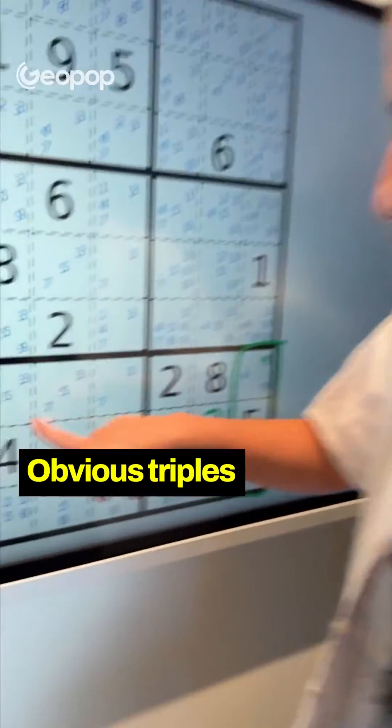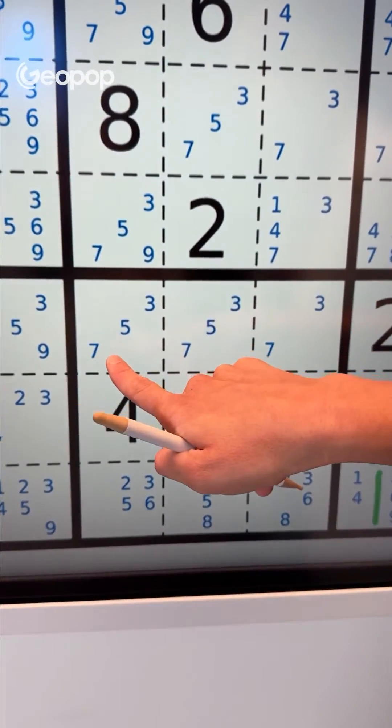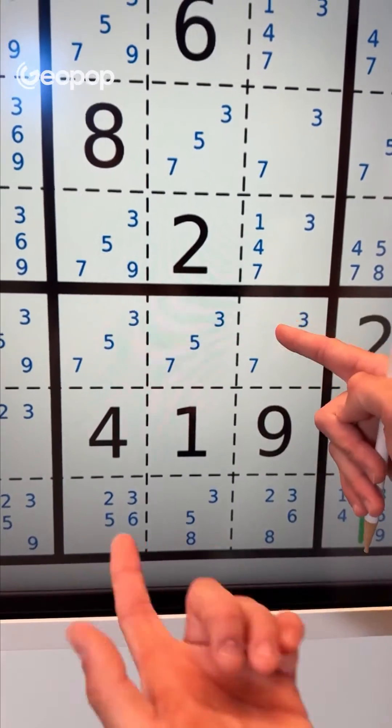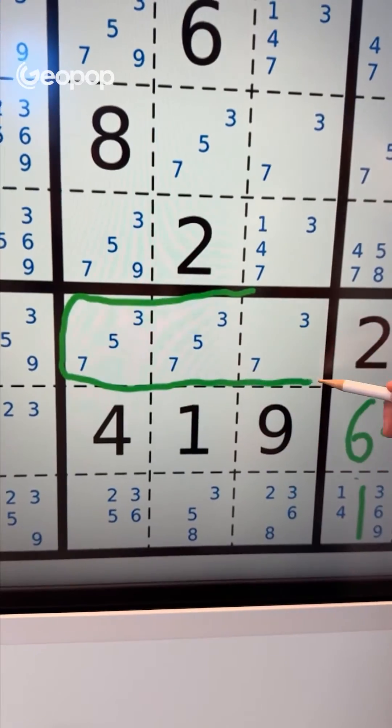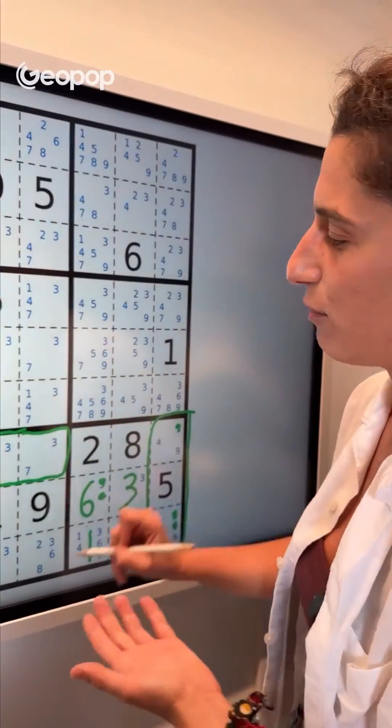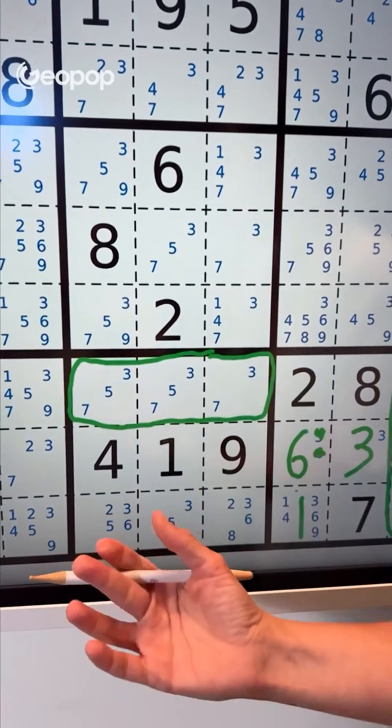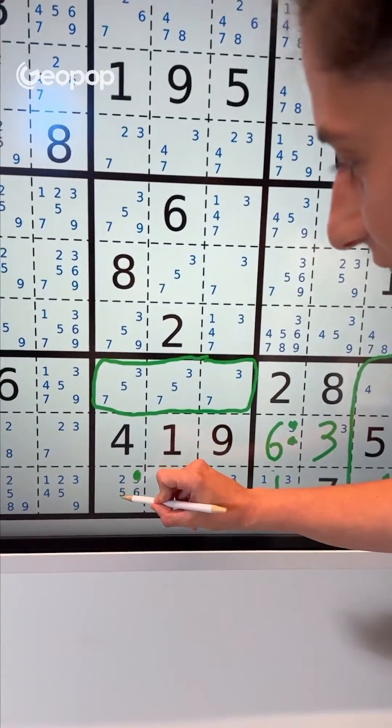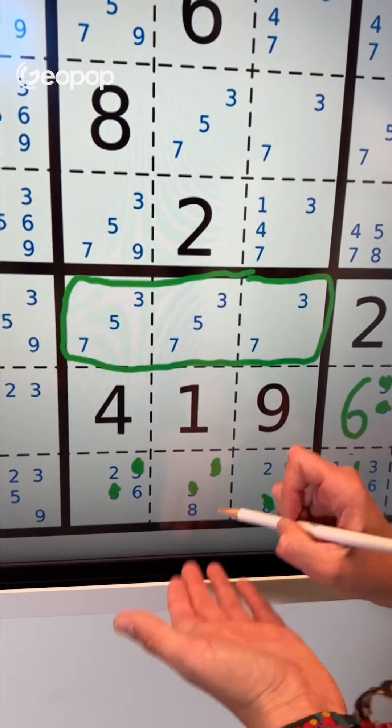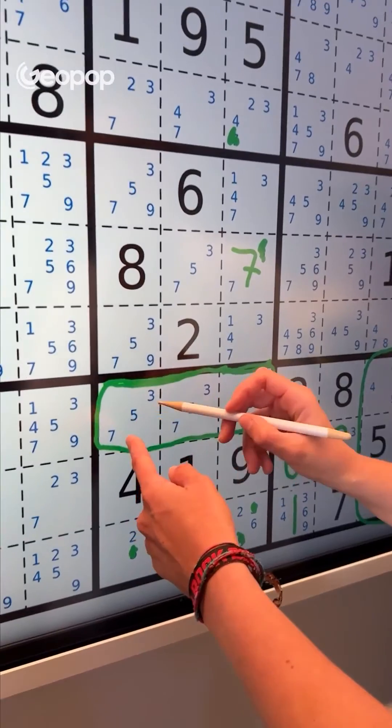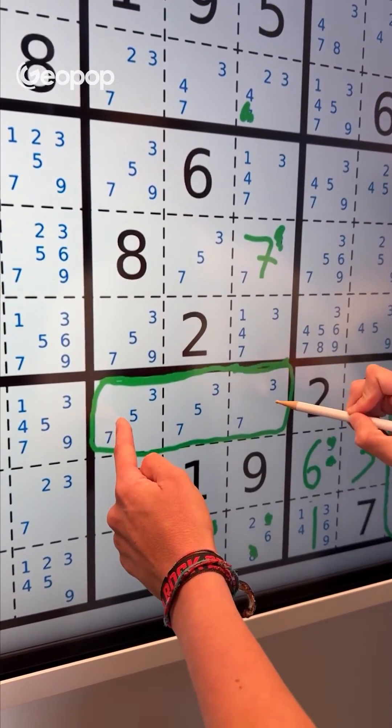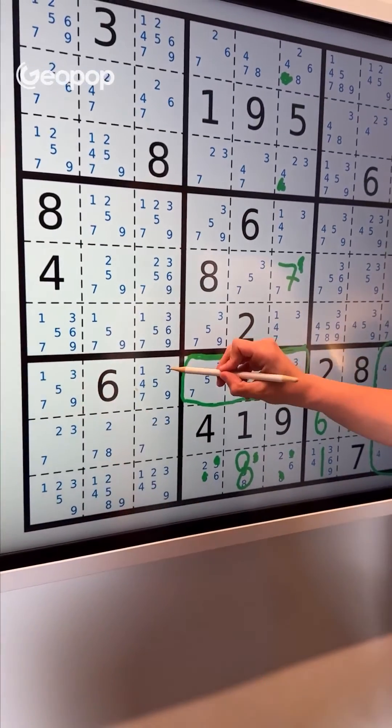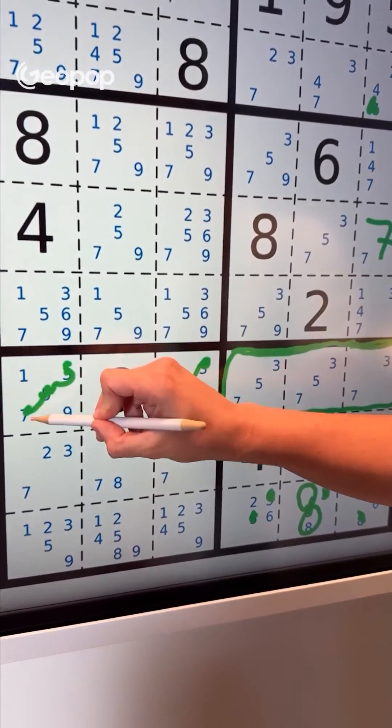We can also have obvious triples. For example, in this case, we have 3, 5, and 7 as the only numbers possible in these 3 cells. Also in this case, it means that these numbers have to go here and nowhere else. Because if 3 were elsewhere, we'd be left with only 7 and 5 in these cells. And how can 2 numbers be in 3 cells? It's impossible. Thanks to this information, I can eliminate 3, 5, and 7 as possibilities from the other cells, which means that in this one, only 8 is left, so I can write it in. I'm also sure that within this row, 3, 5, and 7 will definitely be here in the section, so I can eliminate them from these other parts. So, for example, I can remove those possibilities, and here only 1, 4, and 9, or 1 and 9 remain.